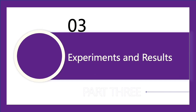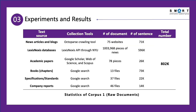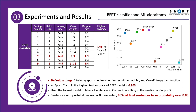Let's dive into the experiments and results. This is a detailed breakdown of the raw documents, which is our corpus 1. The table shows the performance of the BERT classifier, and the figure shows the performance of the traditional machine learning algorithms. The BERT classifier achieved the highest accuracy of 0.903 at epochs 7 and 9, which is higher than the best accuracy of the machine learning algorithms. We used the BERT classifier under the best accuracy performance to label all sentences in corpus 2, resulting in corpus 3. Sentences with probabilities under 0.5 are excluded, and the results show that 90% of the final sentences have probability over 0.85.